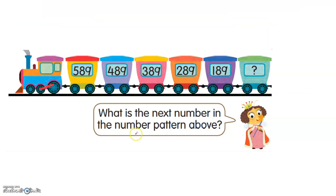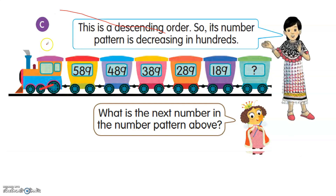What is the next number in this pattern? The first number is 589, then 489, then 389. That means it is decreasing from the larger to the smaller. The number pattern is in decreasing order, decreasing in hundreds.